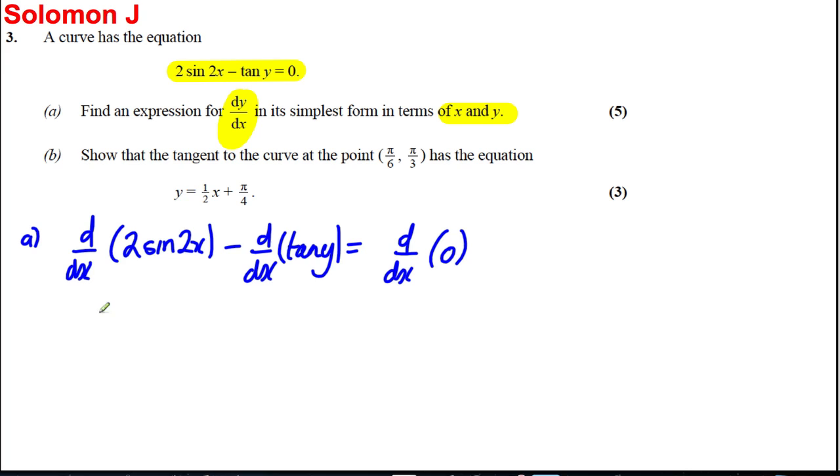Now differentiating 2 sine 2x, well that's the chain rule, so that's going to be 4 cos of 2x. This here is going to differentiate to subtract sec squared y dy/dx and the differential of 0 is clearly 0.